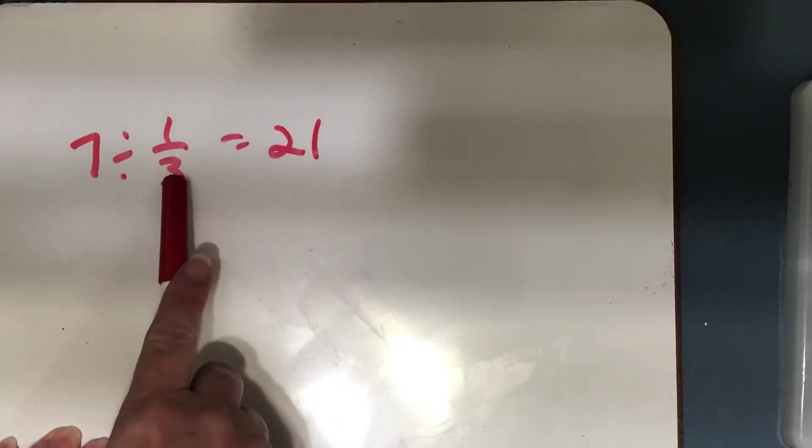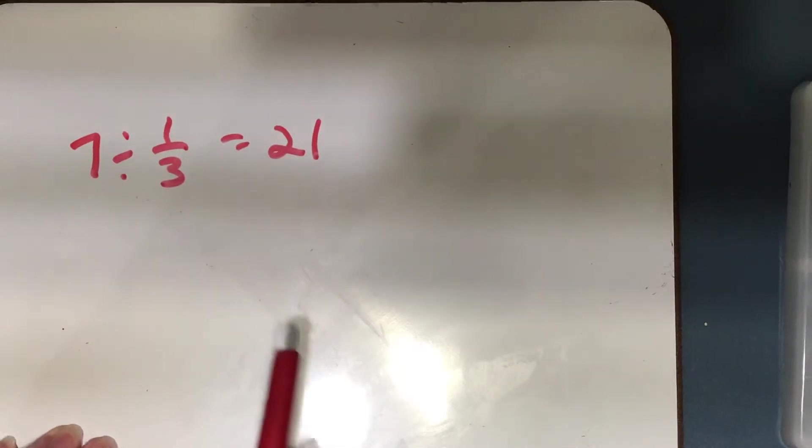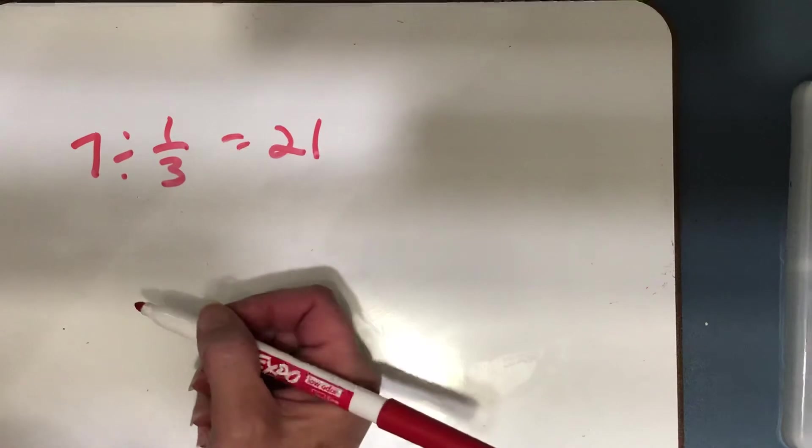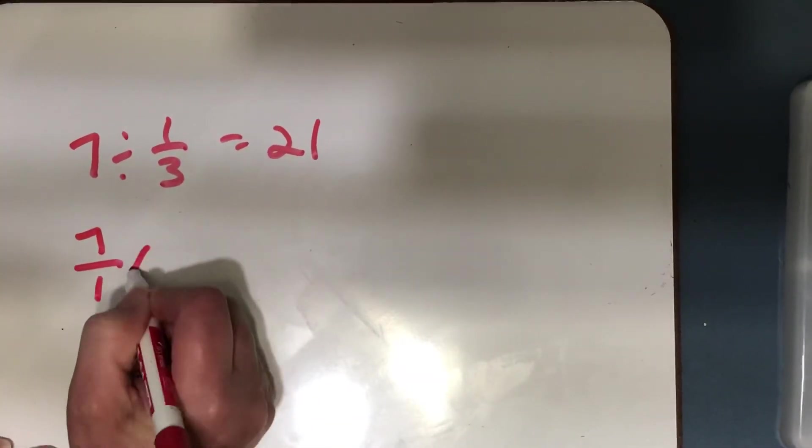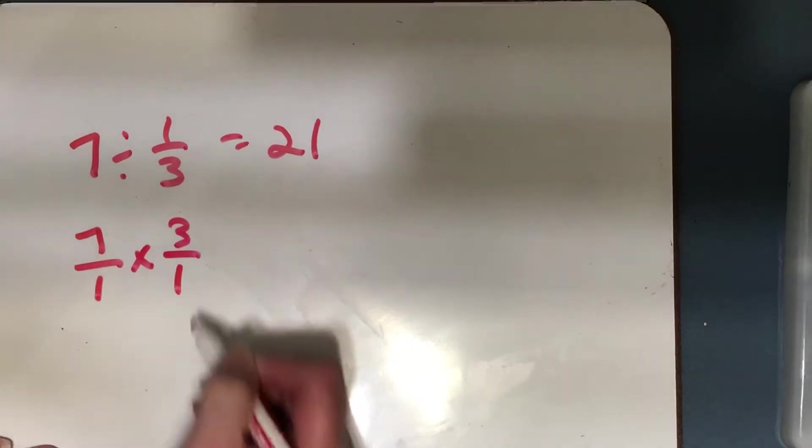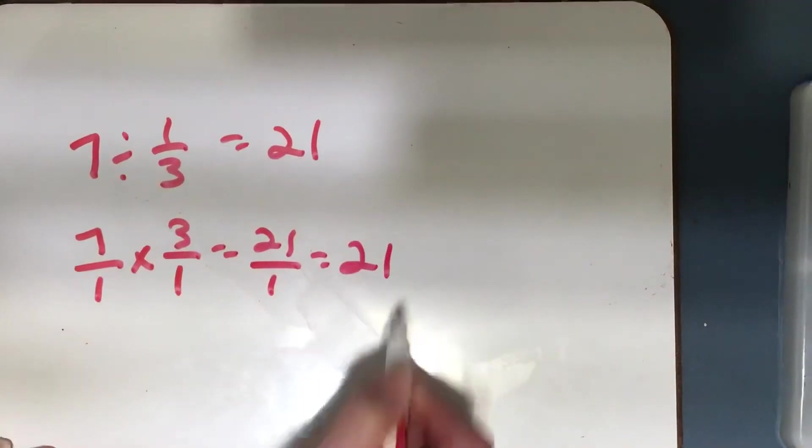Remember, when you're dividing by a unit fraction, you're going to get a whole number if it's a whole number divided by a unit fraction. Now, you could use the standard algorithm with unit fractions also. So 7 over 1 times the reciprocal of your divisor, and you still get 21.